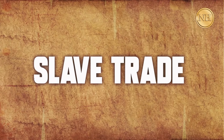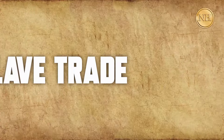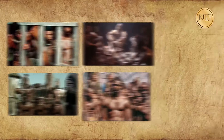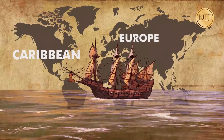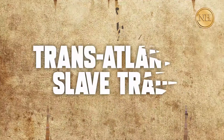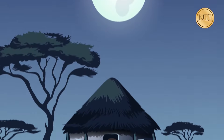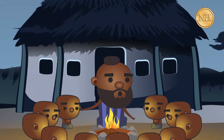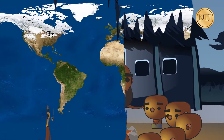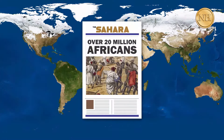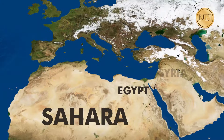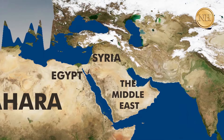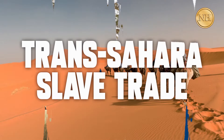Whenever the topic of slave trade comes up, what comes to our minds are the images of black slaves in shackles and chains aboard a ship bound for the Caribbean and other parts of Europe. This was called the transatlantic slave trade, but that is not what we are talking about today. In this episode, we take a look at the enslavement responsible for over 20 million Africans across the Sahara to Egypt, Syria, and other parts of the Middle East — the Trans-Sahara slave trade.